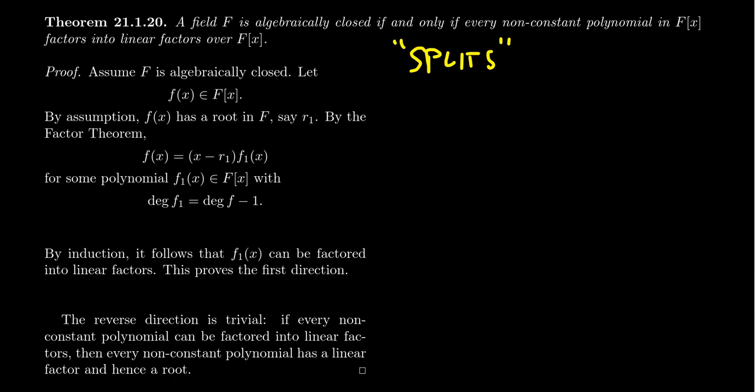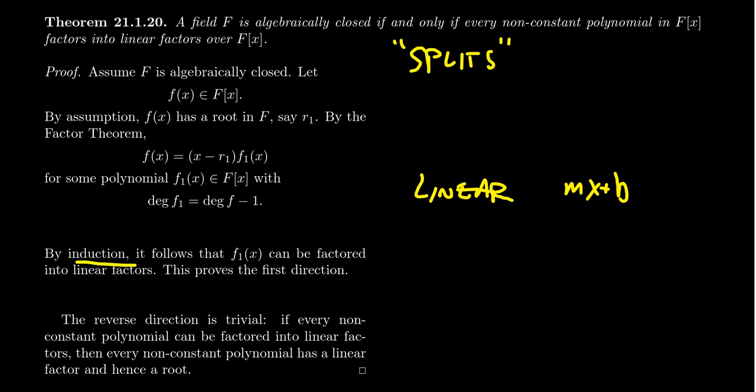Then by the factor theorem, if R₁ is a root, that means f(x) factors as (x − R₁) times some other polynomial f₁(x) in F[X], where f₁ is a polynomial with F coefficients. Clearly the degree of f₁ is exactly one less than the degree of f(x). This is the moment in the proof where we invoke induction. The base case is linear polynomials — something like mx + b. Linear polynomials clearly factor into linear polynomials and always split without any assumption about algebraic closure.